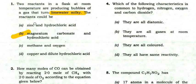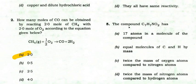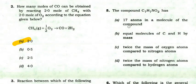Which of the following characteristics is common to hydrogen, nitrogen, oxygen, and carbon dioxide? Options include: they are all diatomic, all gases at room temperature, all colored, or all have the same reactivity. The right option is: they are all gases at room temperature.